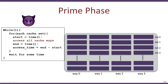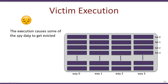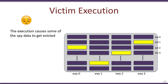Next, the spy process waits for some time, essentially waiting for the victim process to begin execution. When the victim executes, it accesses certain instructions and data. In the cache sets the victim uses, the spy data gets evicted and replaced with the victim data, according to a replacement policy such as least recently used.